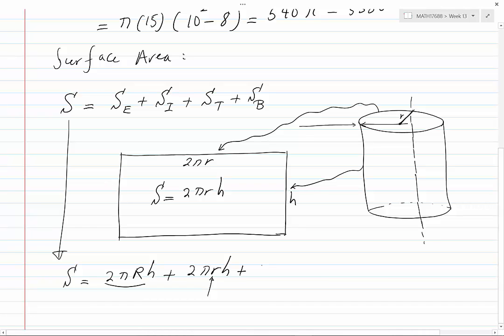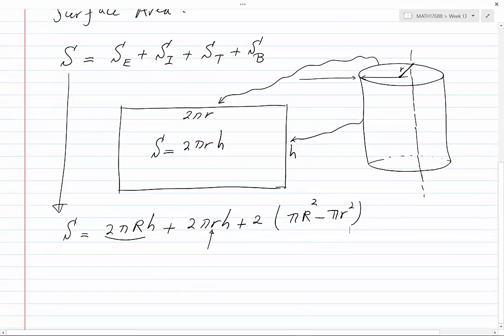The surface area of the top and bottom are the same, so I am going to use a factor of 2, and then either of them is equal to pi capital R squared, which is the surface area of the greater circle on the top, minus pi small r squared, which is the surface area of the smaller circle. On the top, I have all of the parameters here as numbers: R, small r, and h. Therefore, I can calculate this to find the total surface area.